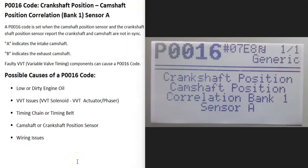Today I'm talking about a P0016 code — what it is and how you can go about fixing it. A P0016 code is a crankshaft position/camshaft position correlation code, bank one, sensor A.